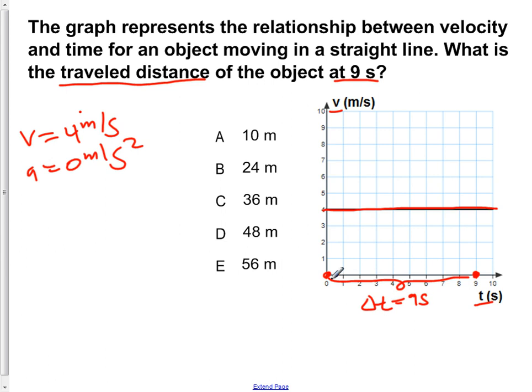That is our change in time, and then we notice that we're still at a height of 4 meters per second. Now, the question is how do you actually calculate a change in your position based off of this velocity versus time graph?